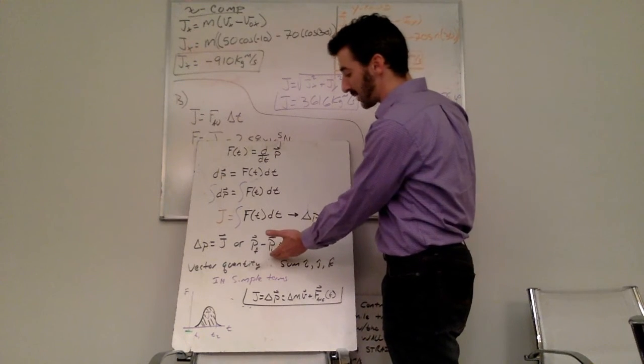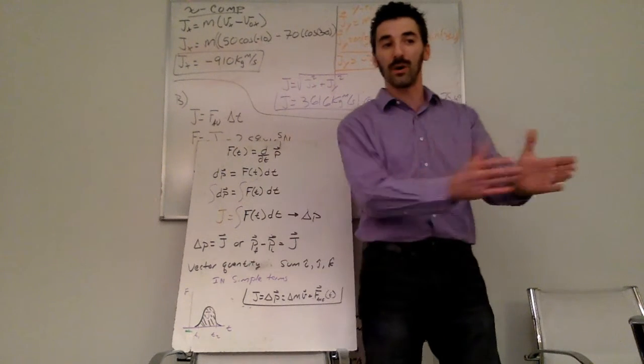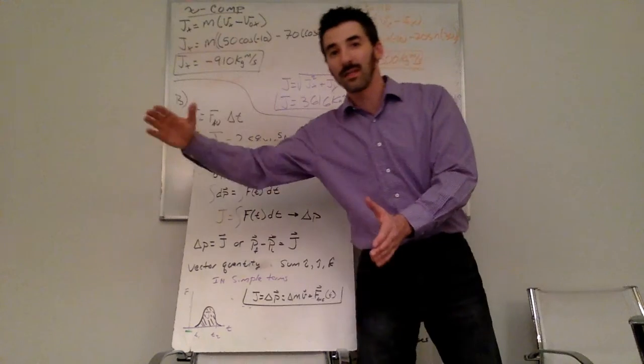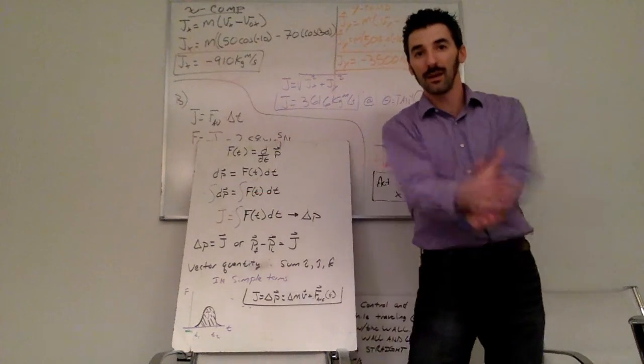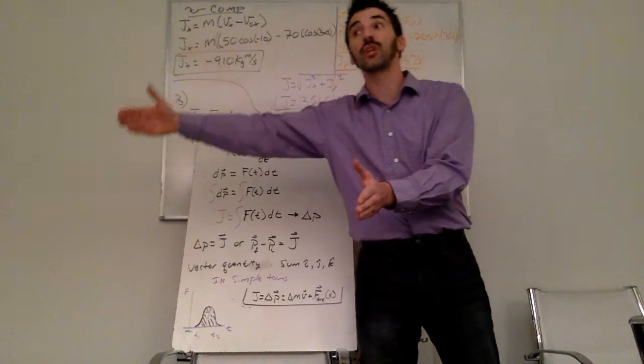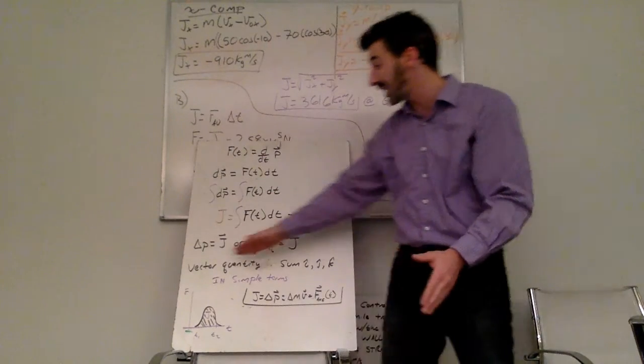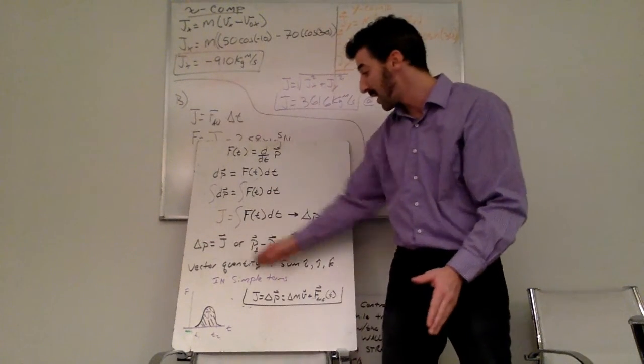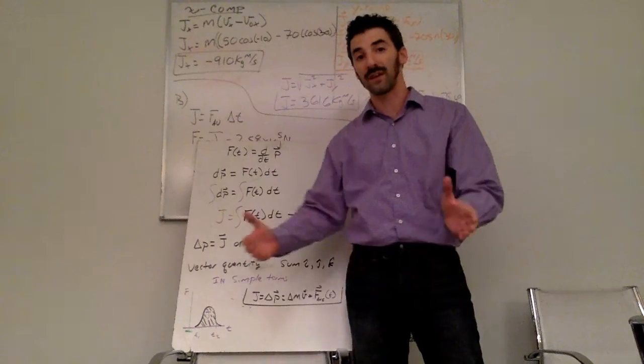Finding the difference of the momentum it started with. So if you go back to the baseball hitting the bat, the ball has some momentum coming in. Bat hits it. Ball changes its momentum. I can find that impulse or change in momentum by subtracting those initial and final momentums.